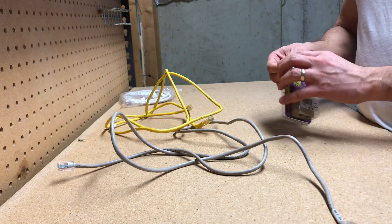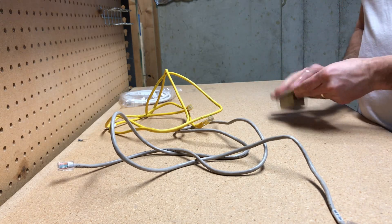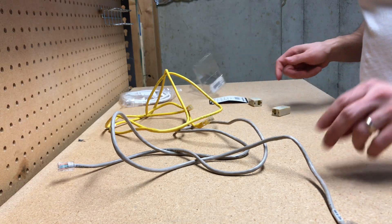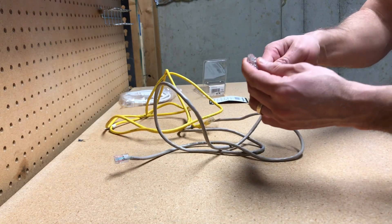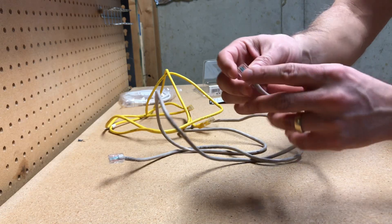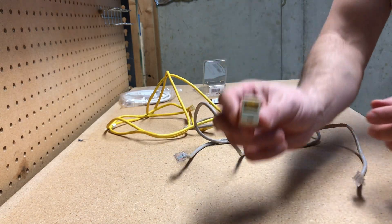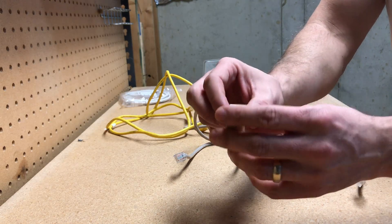One thing to watch out for with these older Cat5 cables - a lot of times these little tabs right here get broken off, so it's kind of hard to put them in. It's just a little plastic, not very sophisticated.